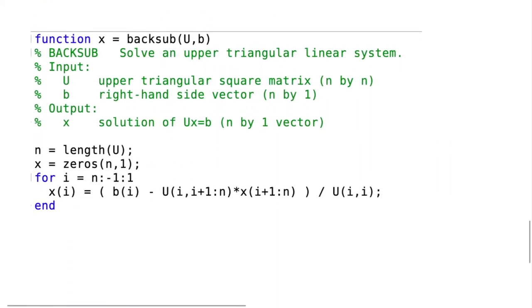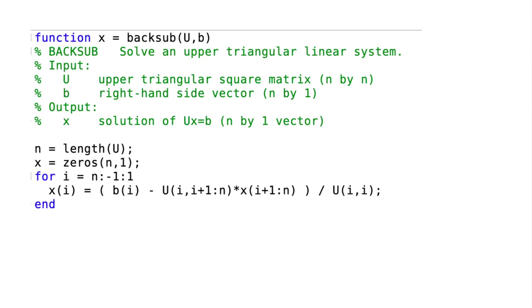Here's the code for backward substitution. It's very much the same. The main difference that you'll see is in the for loop here, we are starting at row n, going down by negative 1, and ending with row 1. But this product here, once again, is an inner product.